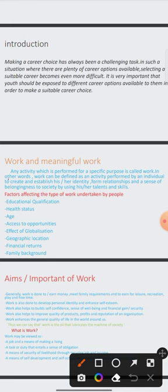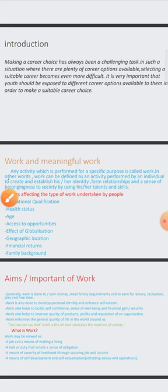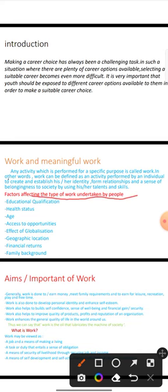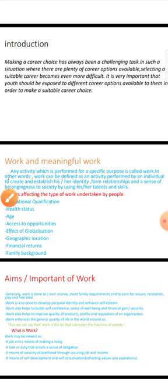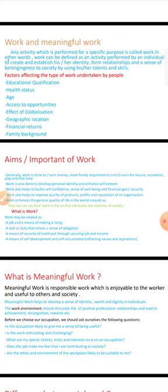Next we will see the factors that affect the type of work undertaken by people. The first factor is education qualification and health status. To do a job, what abilities should a person have? What are the factors — education qualification, health status, age, whether they are capable of utilizing opportunities, globalization, geographical location, financial return, and family background.